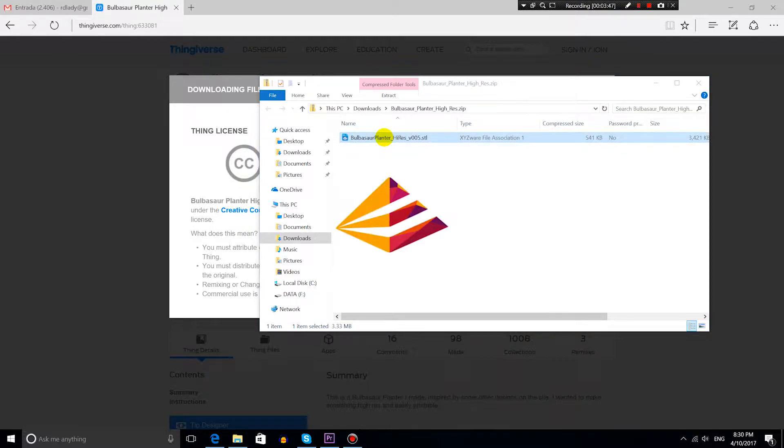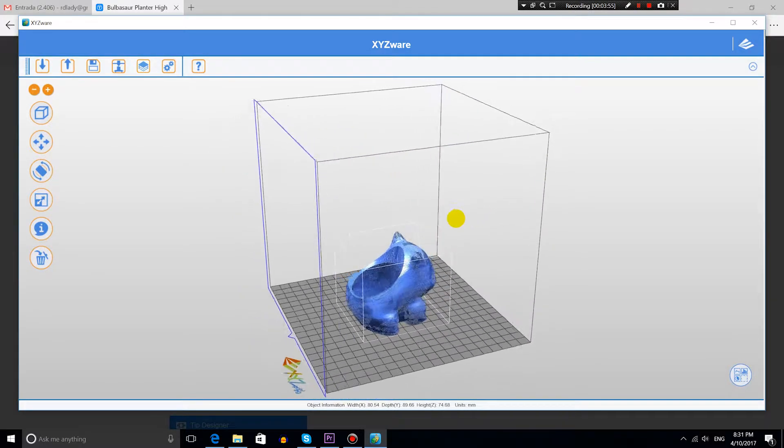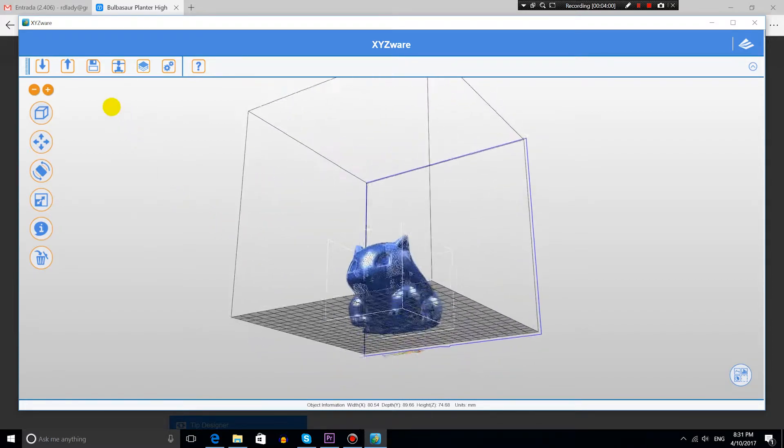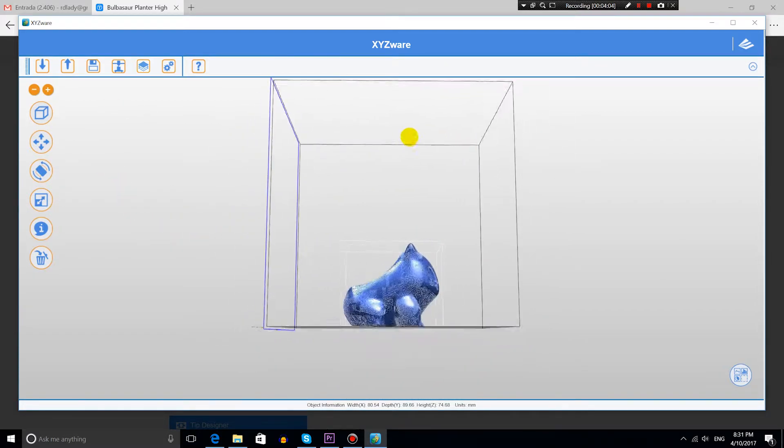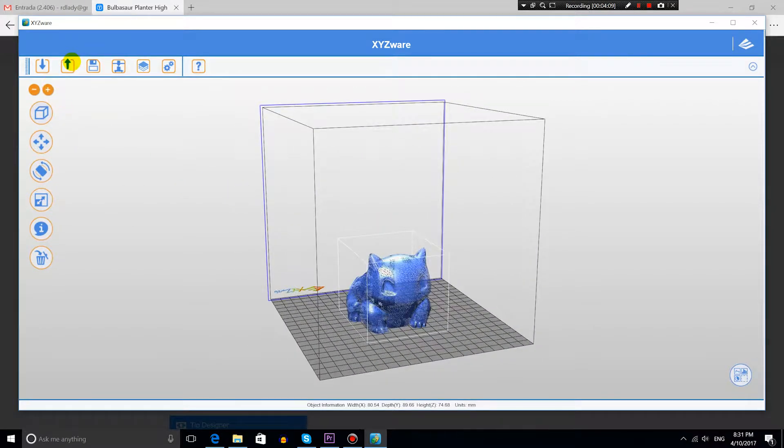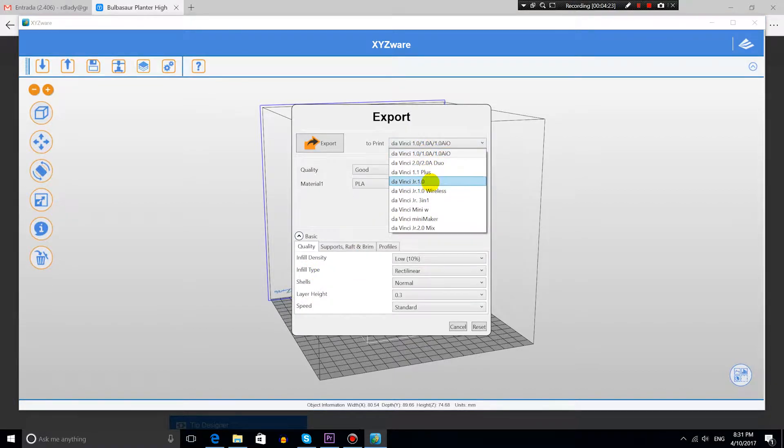Once I downloaded the 3D model of the Bulbasaur in STL format, I could open this model directly in the software of my 3D printer. The 3D printer will take this 3D model and prepare it for printing layer by layer, as if the model was split into many horizontal slices. It will print these slices one on top of the other until the model is completely printed.